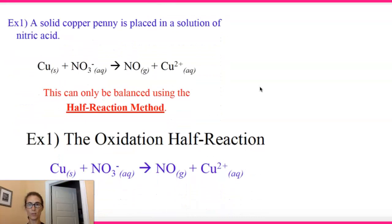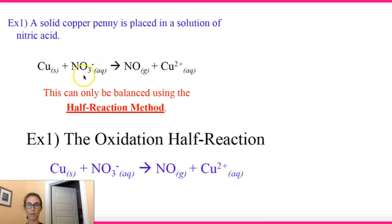So here's our first example: a solid copper penny is placed in a solution of nitric acid. The first thing we want to write out is our equation, so we have copper being added to NO₃⁻. We don't need to worry about H⁺ ions yet — they're not necessary for the overall half-reaction setup here because hydrogen doesn't change. So first we want to figure out what is being oxidized and what is being reduced by doing some oxidation number calculations.